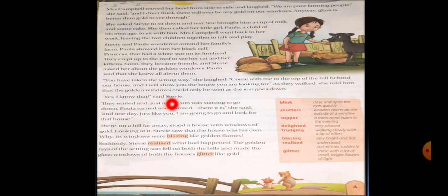"Yes, I know that," said Steve. Steve was in favor of this statement because he also saw the golden windows at the time of sunset from his home. They waited and just as the sun was starting to go down, Paula turned and pointed. "There it is," she said. Now as the sun set, Paula showed him the golden windows. And one day, just like you, I am going to go and look for that house, she said. As today you came here to see the golden windows, one day I will also come to that place to see the golden windows.